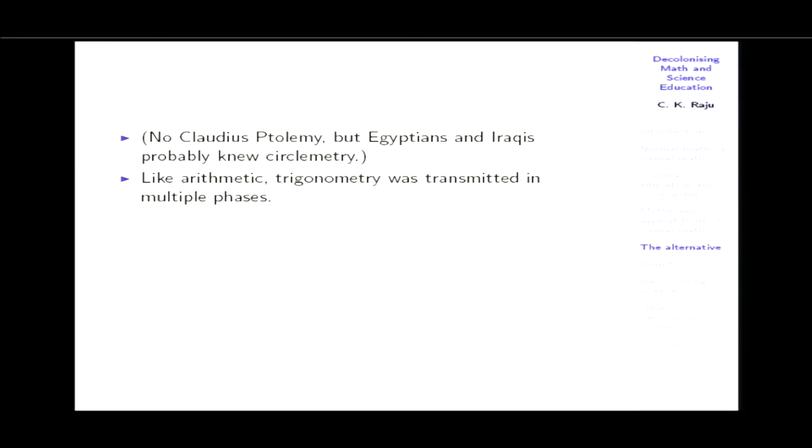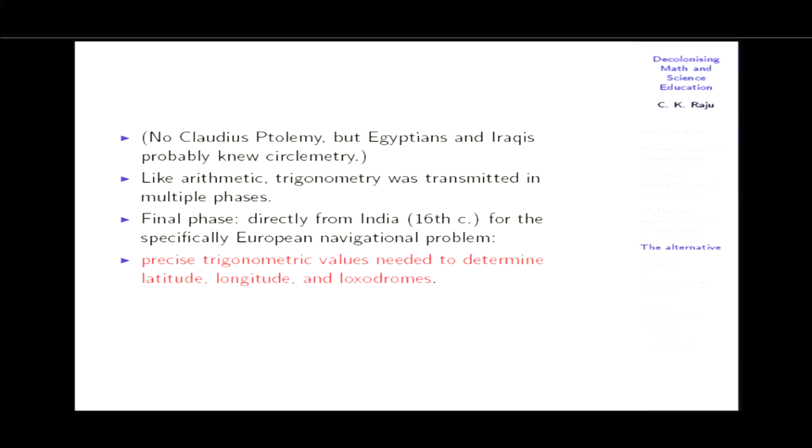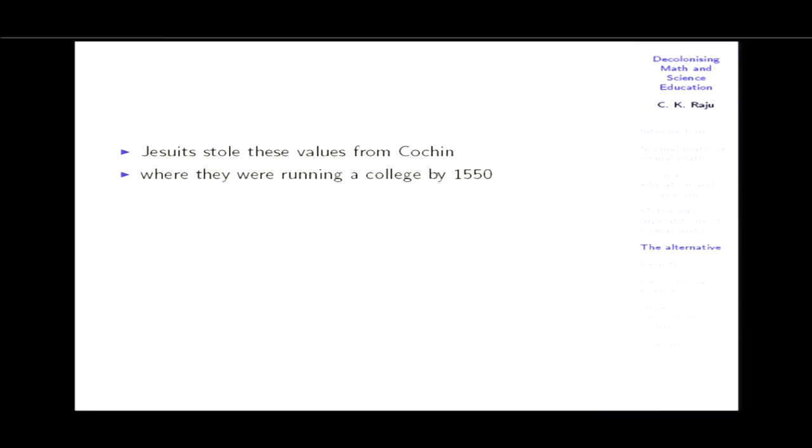There was no Claudius Ptolemy. Trigonometry was transmitted in multiple phases; the final phase was directly from India in the 16th century for the specifically European navigational problem. Europeans didn't know how to navigate; they needed precise values to determine latitude, longitude, and loxodromes. Jesuits stole this from Cochin, where they were running a college teaching Malayalam to locals around 1550 and mass-translating local texts to Latin as they did in Toledo. These precise trigonometric values were stated by Madhava in the 14th century in a poem in Devanagari script — numbers in a reverse sexagesimal katapayadi system of minutes, seconds, and thirds.